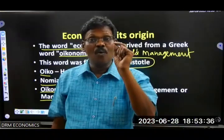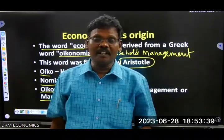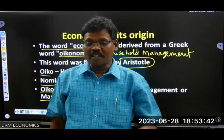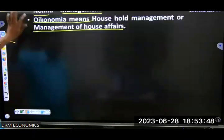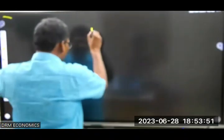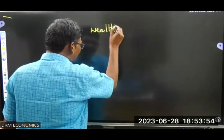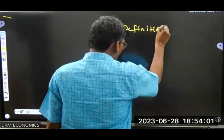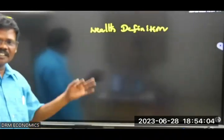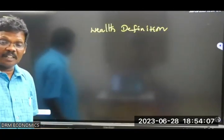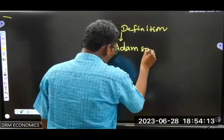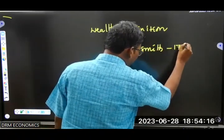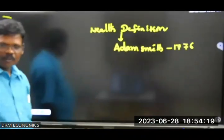There are so many definitions of economics. Among them, some important ones include what is called the wealth definition — this is the earliest definition for economics. This definition was given by Adam Smith in 1776.